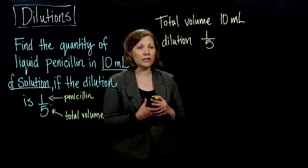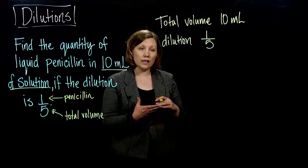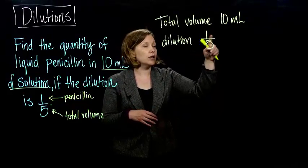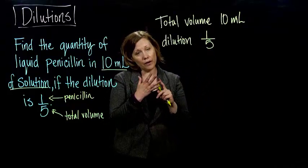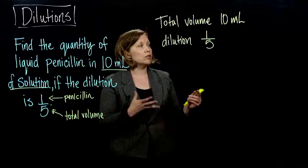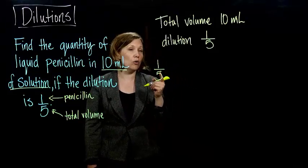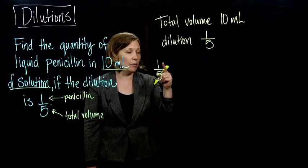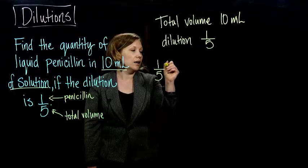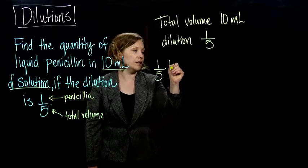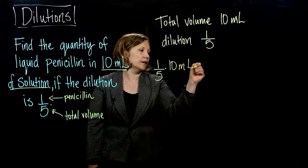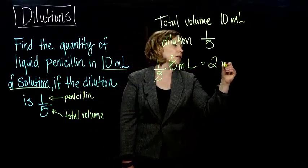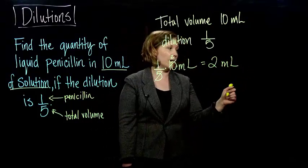So we could do this the same way that we did the last problem. We could treat the dilution as a fraction or we can solve it with ratios and proportions. So if we have one-fifth of our total volume needs to be penicillin, one part to five parts, we do one-fifth times 10 milliliters. These guys cancel out, leaving us with two. So I need two milliliters of my penicillin.